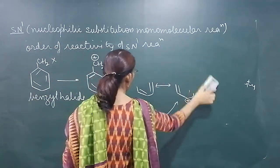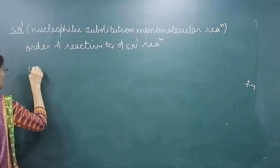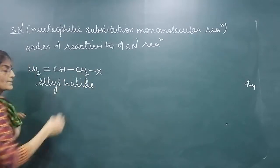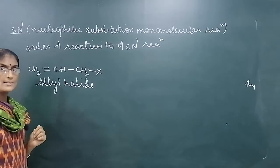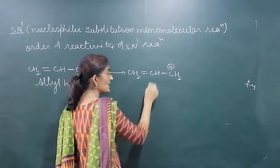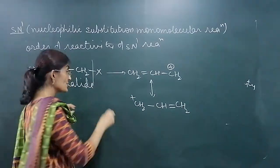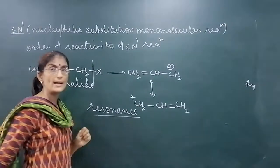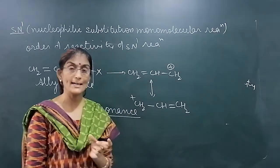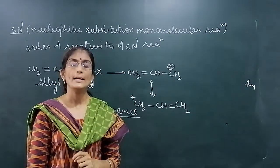Another carbocation which is stable is the allylic carbocation. The allyl halide is CH2=CH-CH2X. Allylic halides are also reactive towards nucleophilic substitution even though they are primary, because if this bond breaks, the allyl carbocation is formed and it is stabilized by resonance — the electron pair shifts and the positive charge is delocalized. Due to this resonance, the allylic carbocation is also stabilized. If a more stable carbocation is formed, the rate of SN1 reaction will be faster. The rate of SN1 reaction depends only on the nature of the alkyl halide and the stability of the carbocation. In the next video, we will discuss SN2 mechanism.